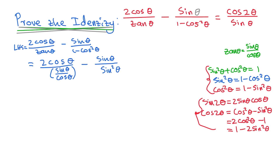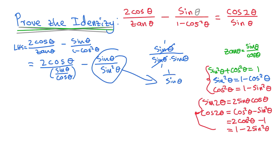Now I only see sin in that second term. If I have sin θ on top and sin²θ on the bottom — since sin²θ is sin θ times sin θ — one sin θ cancels, leaving 1 over sin θ. So the second term simplifies to 1 over sin θ.